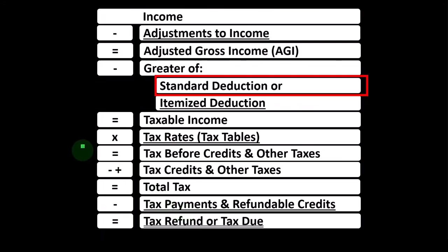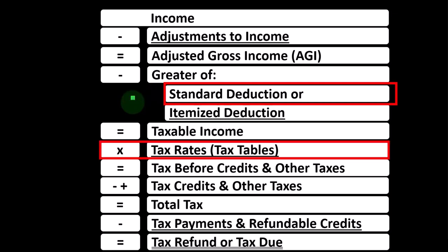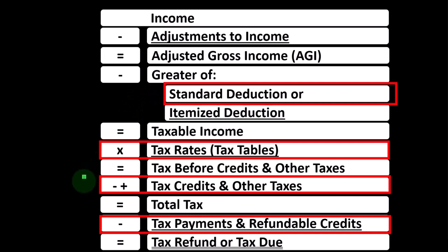Looking at dependents, remembering that every time we look at a particular item for income taxes, we want to visualize the income tax formula and think about the primary line items that would be affected from it, and then think about the residual effects of the changes to those line items on the income tax formula. When we're thinking about dependents, the primary line items are generally the credits down below.